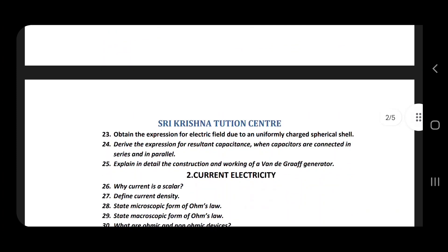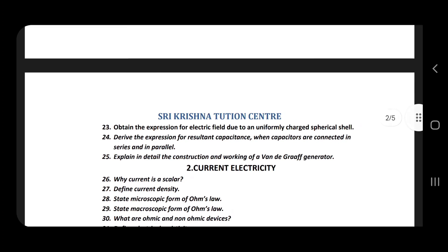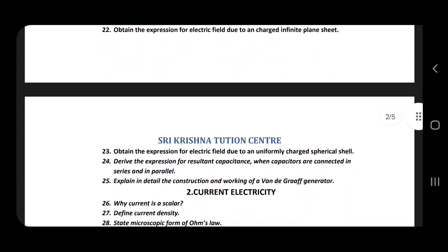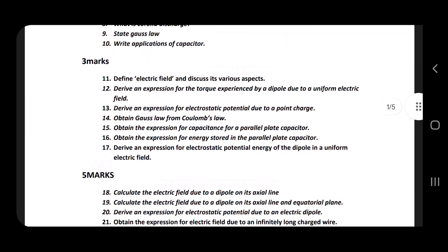Let's see what the capacitor is, and the Van de Graaff generator is shown here. For the three-mark section, Gauss's law from Coulomb's law is covered.